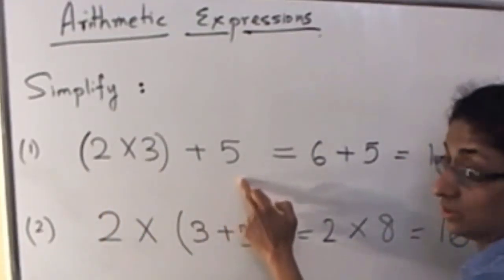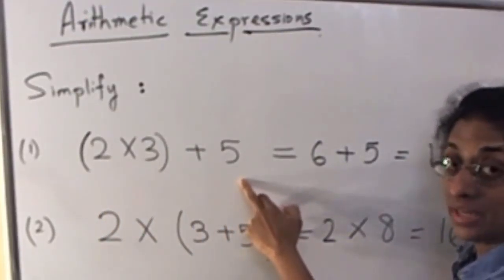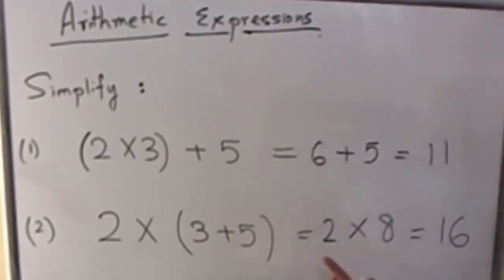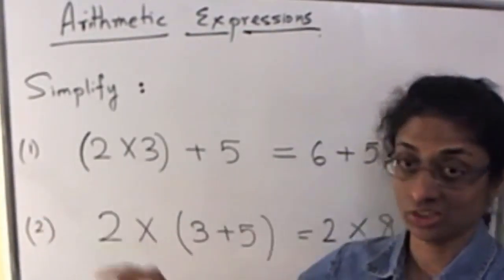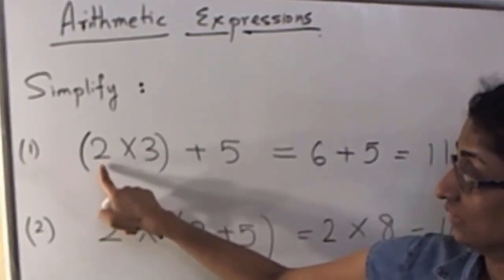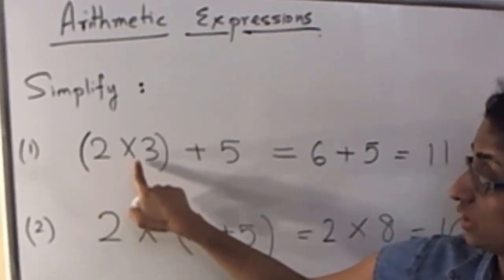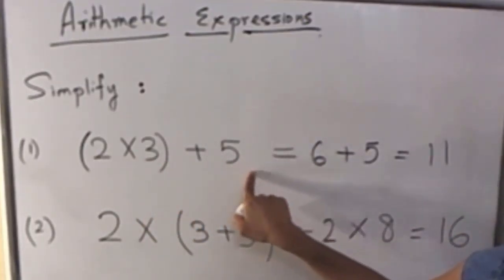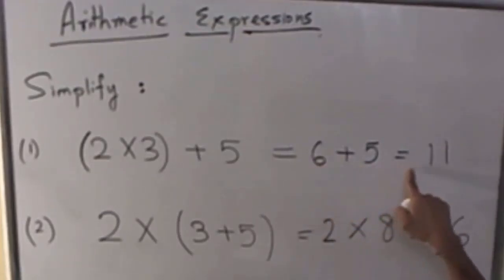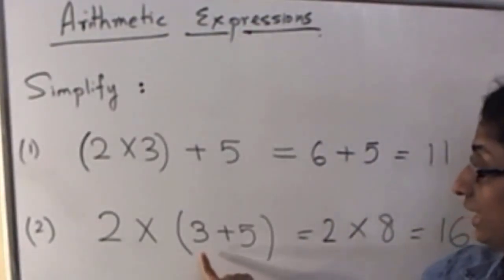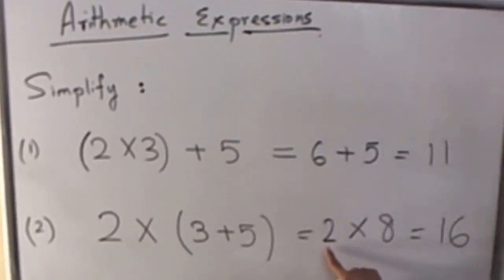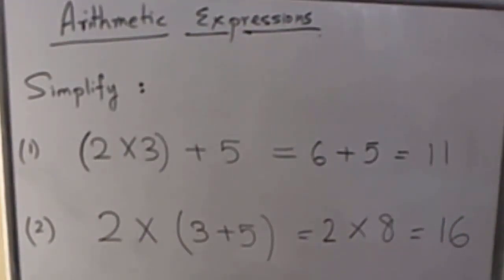To summarize: simplifying arithmetic expressions means looking at the expression, knowing it is a number, and finding out what that number is. Practice saying in words what the expression means. For the first: I multiply 2 and 3 first, then add 5 — giving 6 plus 5 equals 11. For the second: I add 3 and 5 first, then multiply by 2 — giving 2 times 8 equals 16. Thank you.